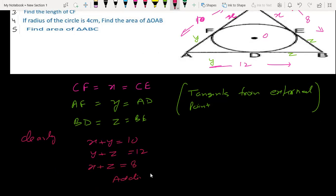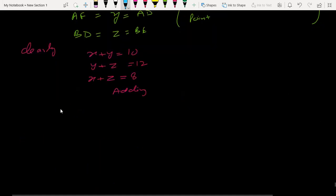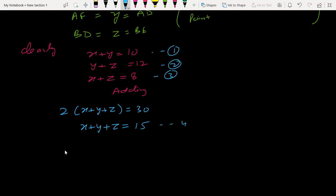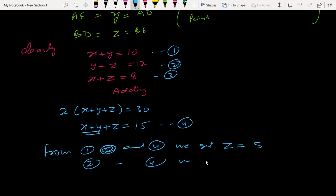So we have three equations. Add all, so you can see here twice of x, y, z - all the terms are two times and we have 30. So x plus y plus z equal to 15. From first and fourth, y is 5. From second and fourth, y is 12 so z is equal to 3. And from third and fourth, x plus z is equal to y is equal to 7.